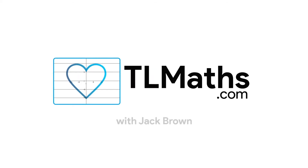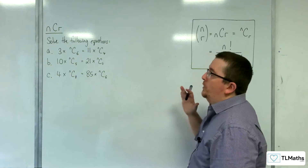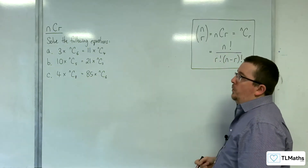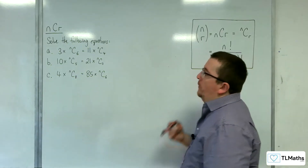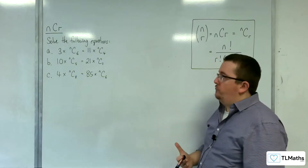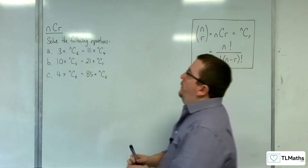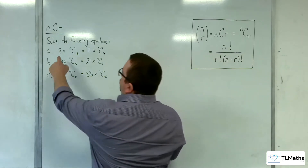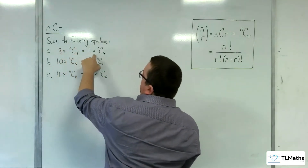In this video we're going to take a look at solving three equations, each involving nCr. We'll set up an equation for each one to solve. The first one is 3 times nC6 equals 11 times nC4.